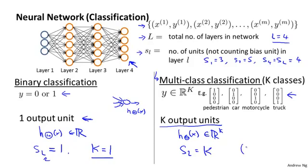And usually we would have K greater than or equal to 3 in this case because if we had 2 classes, we don't need to use the 1 versus all method. We need to use the 1 versus all method only if we have K greater than or equal to 3 classes. So if we had only 2 classes, we would need to use only 1 output unit.